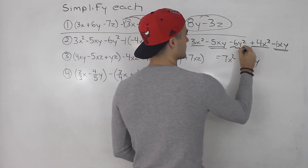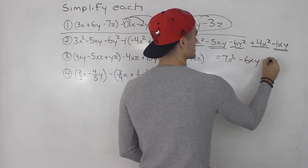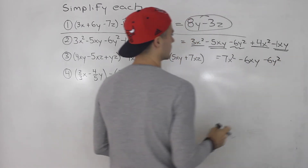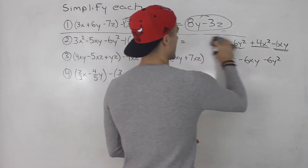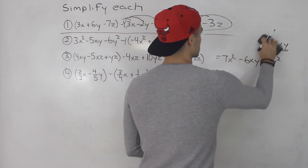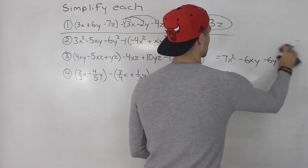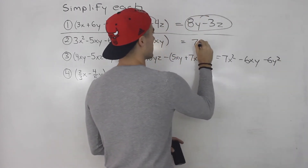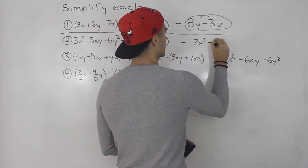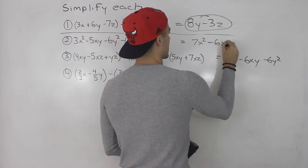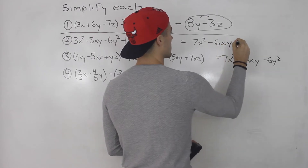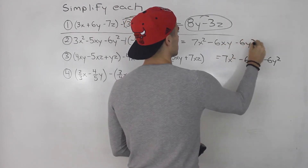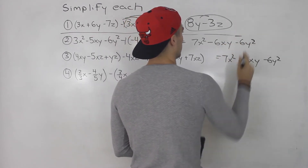And then we have minus 6y squared. So that is the answer: 7x squared minus 6xy minus 6y squared.